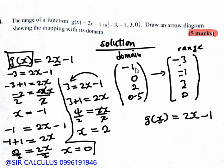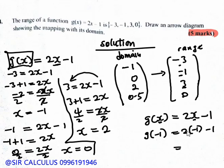So we have negative 1, then negative 2, then negative 1 — giving us negative 3. So you can see negative 3 maps from the domain.